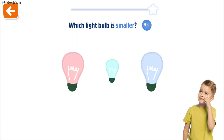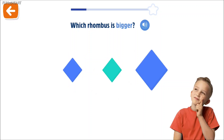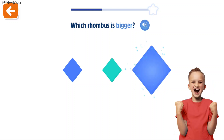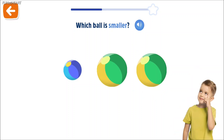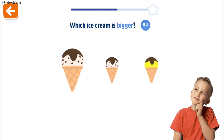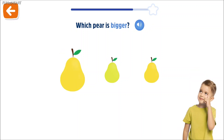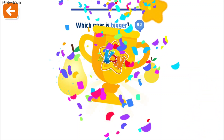Which light bulb is smaller? Cool! Which rhombus is bigger? Excellent! Which ball is smaller? Cool! Which ice cream is bigger? Amazing! Which pear is bigger? Awesome!